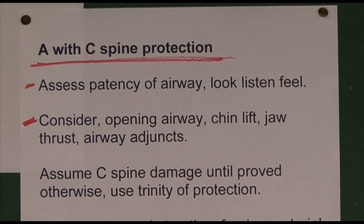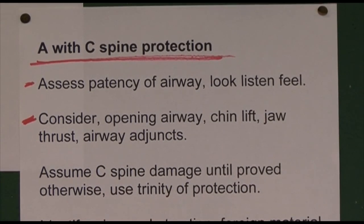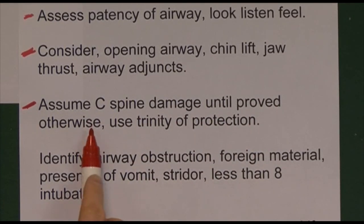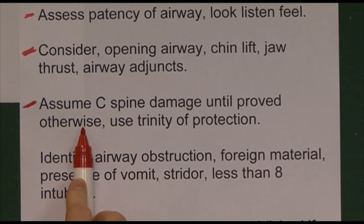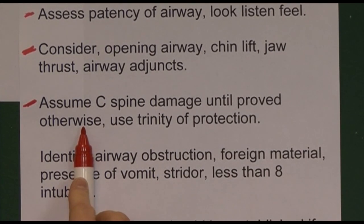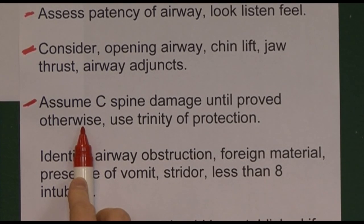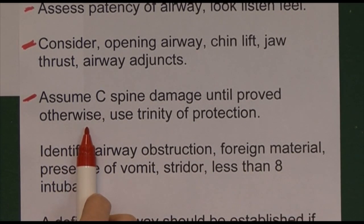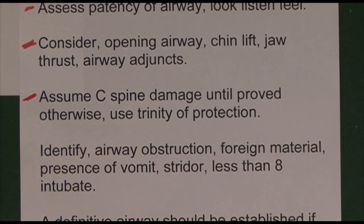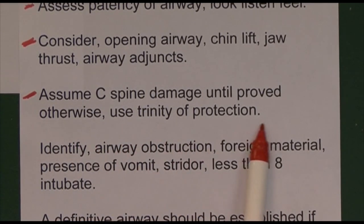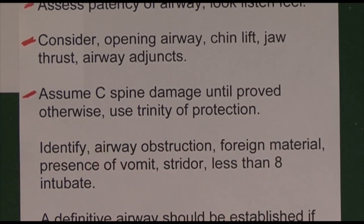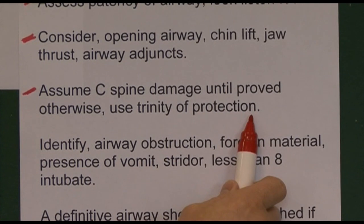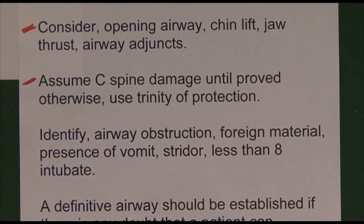The principle in trauma is to assume C-spine damage until proved otherwise. That requires an X-ray of C1 down to C7, normally including T1, in both the AP (anteroposterior) and lateral views, assessed by someone very skilled — if at all possible, a consultant orthopaedic surgeon. We use the trinity of protection: a hard collar around the neck, sandbags on either side of the head, and taping the forehead down onto the trolley.